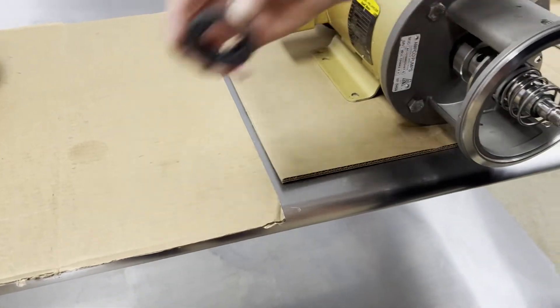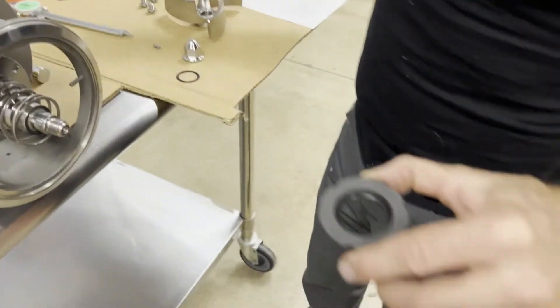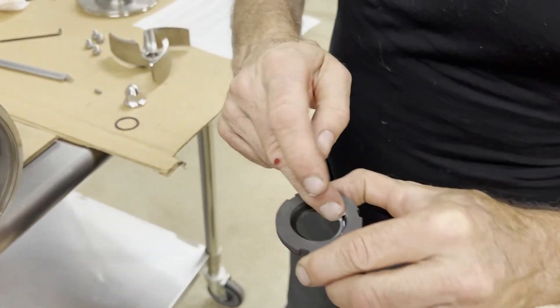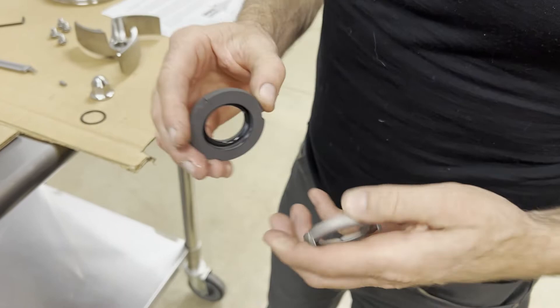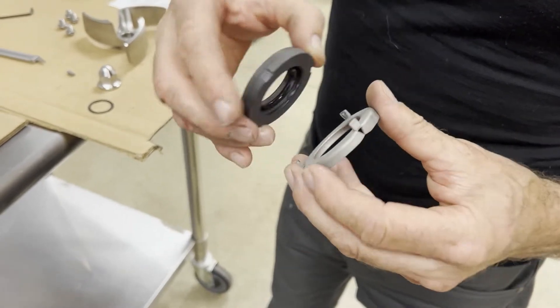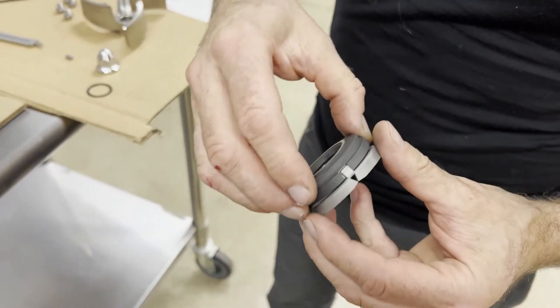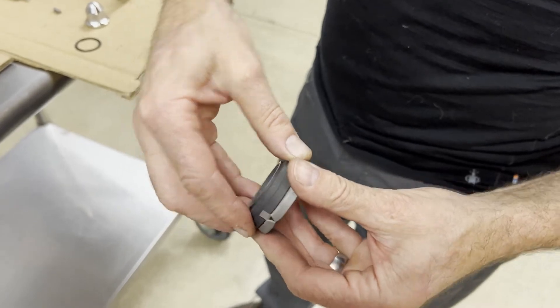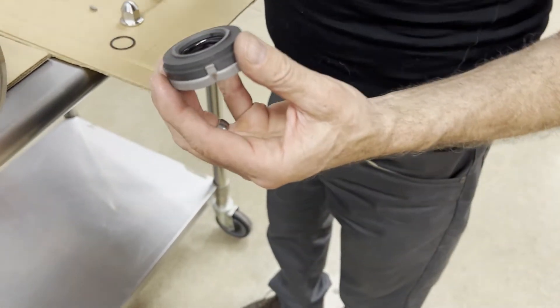I have my second seal. Again, it has an O-ring in there. I'm going to lubricate that O-ring, assemble the seal onto the cup, and make sure that face is clean.